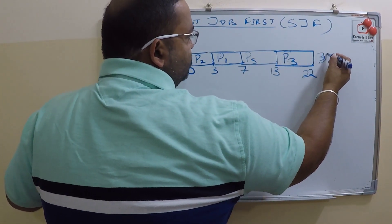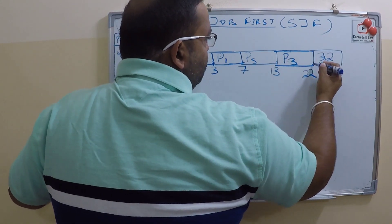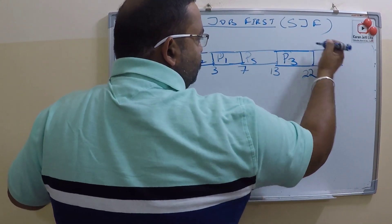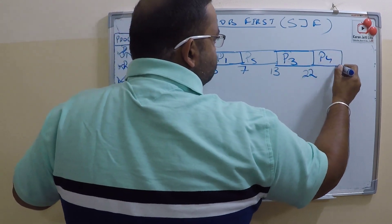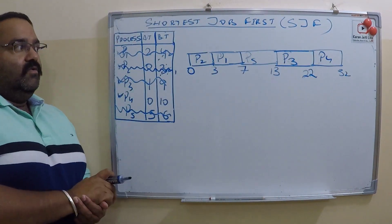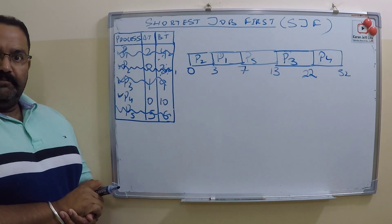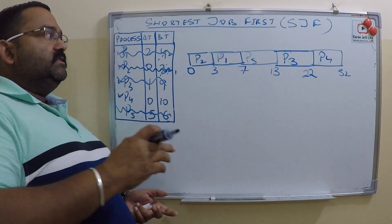Here comes P4. So this is the Gantt chart for Shortest Job First.